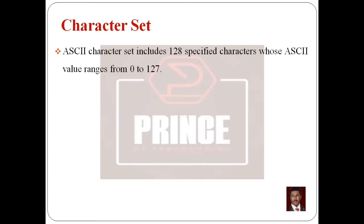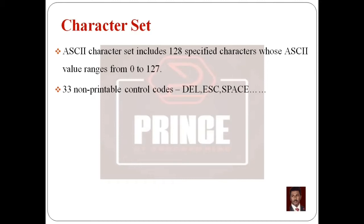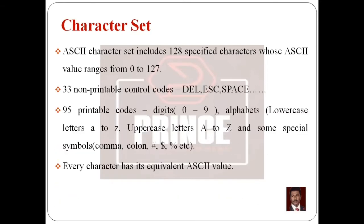In the ASCII Character Set, there are a total of 128 characters. The ASCII values range from 0 to 127. In these 128 characters, there are around 33 non-printable characters used for control codes — for example, delete, paste, and escape. Then there are 95 printable codes.